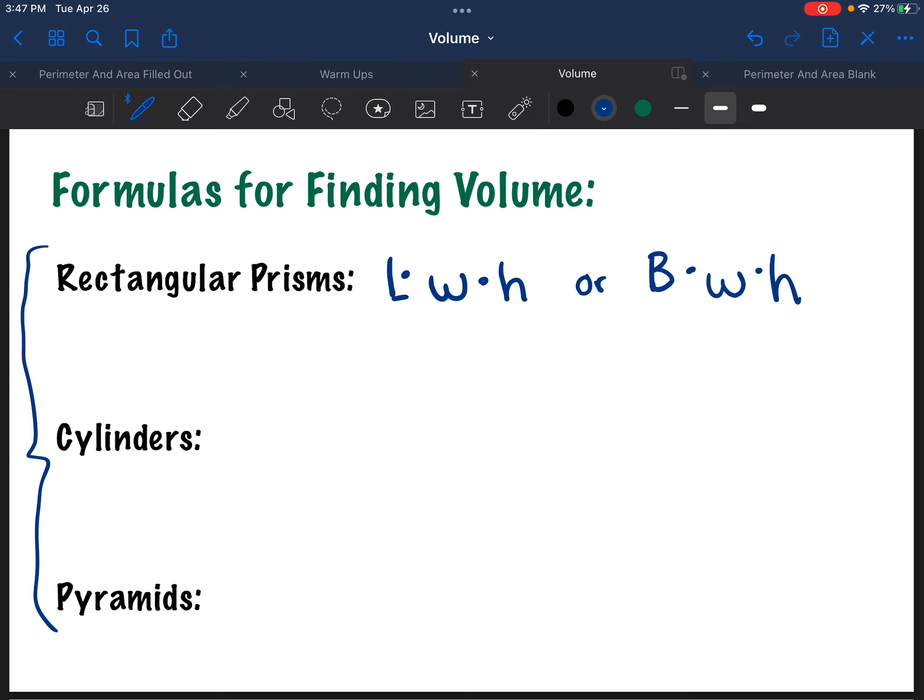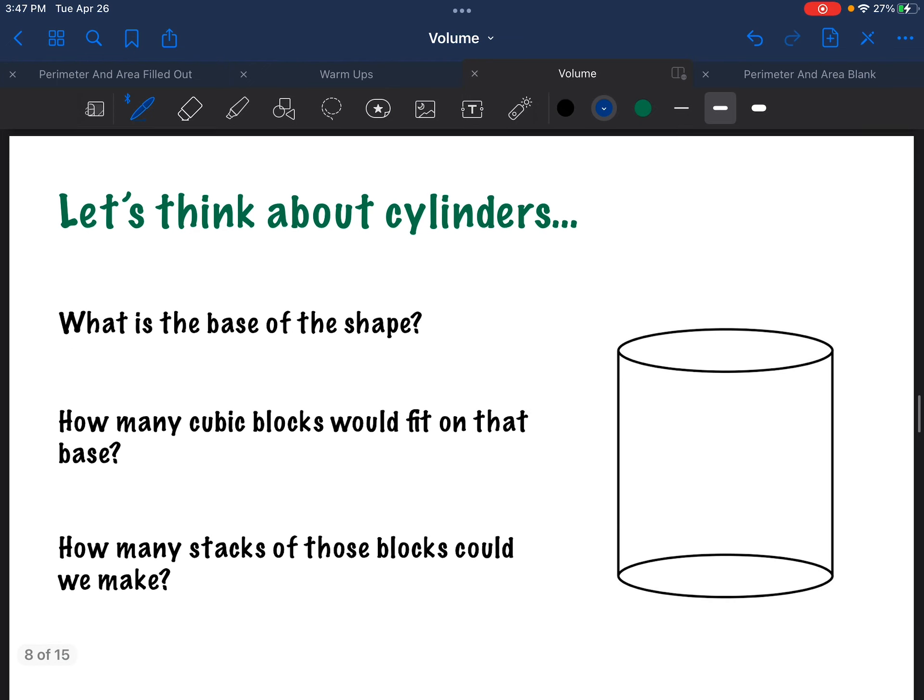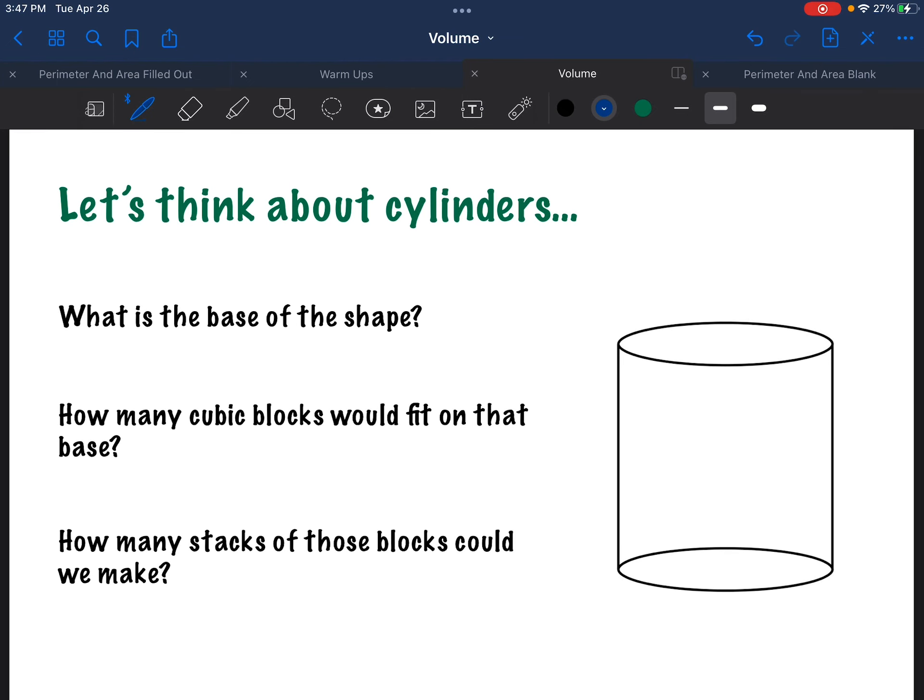So we're going to talk about how to find each of these equations for volume. Let's go ahead and move on to cylinders. So let's think about cylinders a little bit. A cylinder is this shape on the right. You see these a lot of times with like paper towel rolls or toilet paper rolls or pipes, anything that's like circular and then stretches. So what's the base of the shape?